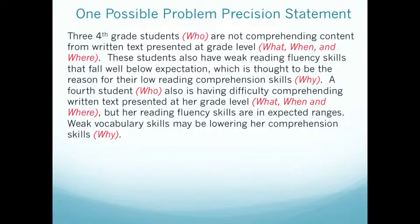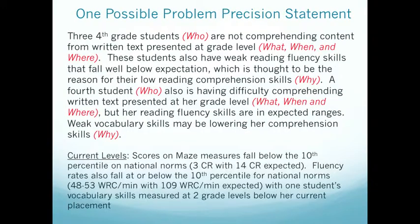A fourth student — Sally — also is having difficulty comprehending written text at her grade level, but we believe that her weak fluency skills are not the problem. Instead, we believe it's because she's missing a lot of basic vocabulary skills that are interfering with her comprehension. We can also include current levels, which tells us where these students are now. This is helpful not only when developing goals but also gives us a picture of how powerful a solution we will need to put in place to close that gap.